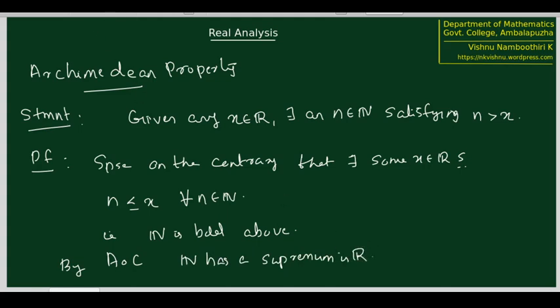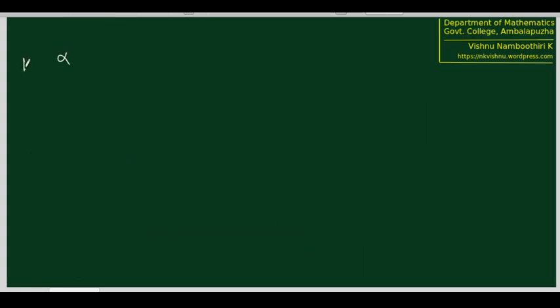Since N is bounded above, there must be a supremum for N in R; call that supremum alpha. Now we have alpha as the supremum of N. We have already proved that if a supremum exists, it is unique. Therefore, alpha is the supremum of N. But we know there is a property of the supremum: if alpha is the supremum, any number less than alpha cannot be an upper bound for N.